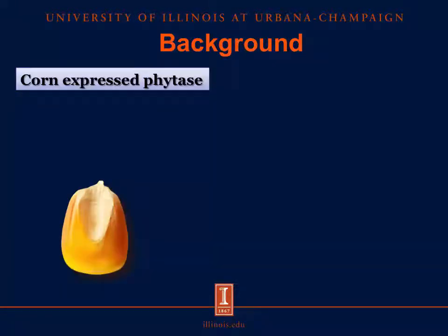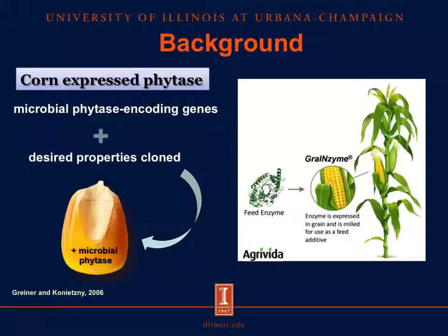Therefore, of all the strategies mentioned, only crops expressing microbial phytase is a viable strategy today. Corn is an attractive source for the production of transgenic plants expressing phytase since it does not require extreme heat during post-harvest processing, unlike soybean and canola. The transgenic plant expressing phytase is generated by microbial phytase encoding genes with desired properties cloned and inserted in order to yield increased levels of phytase. So, we will have corn with phytase expressed in the grain, and then the grain is milled and is ready for use as a feed additive.